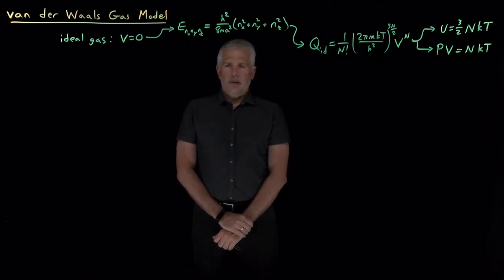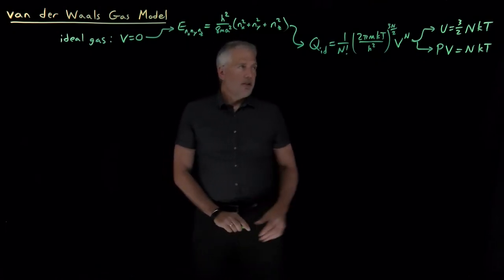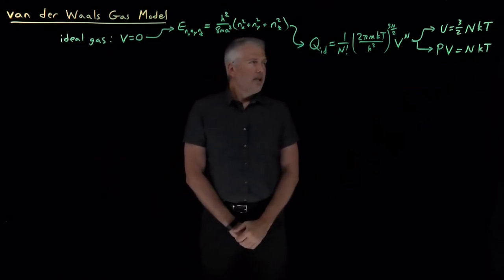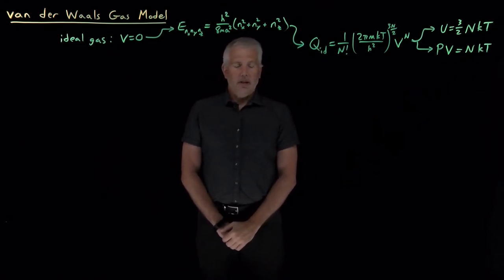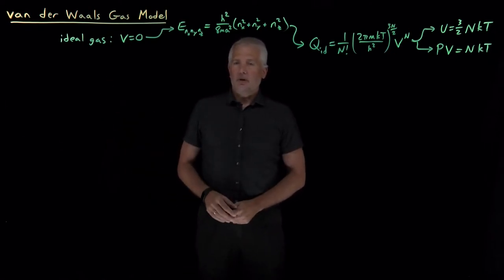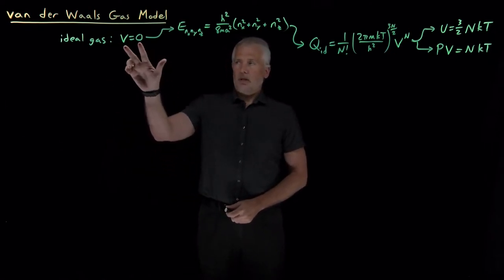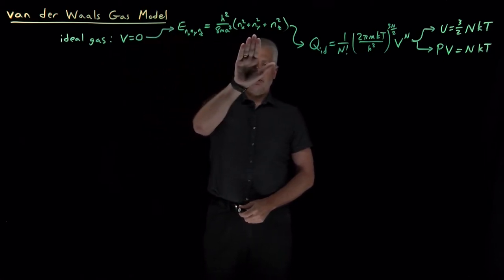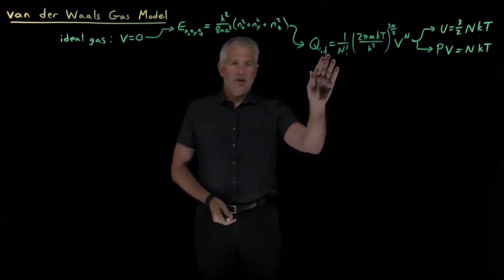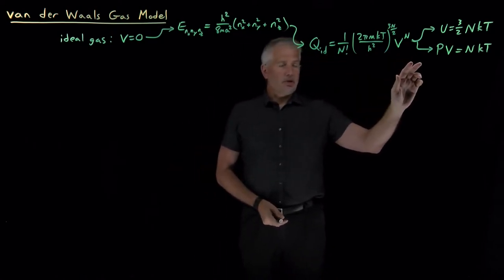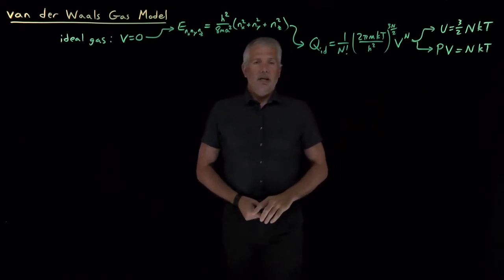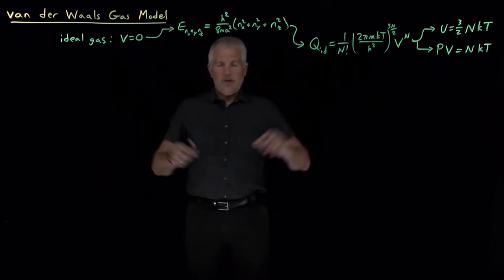Now we understand a little bit about ideal gases — not just PV equals NkT or PV equals NRT as you knew from general chemistry, but the whole process of starting from assuming no potential energy, doing some quantum mechanics to solve for the 3D particle-in-a-box energies, using those to get a partition function and thermodynamic connection formulas to get energy and pressure for an ideal gas. That's the full process we've considered for an ideal gas.